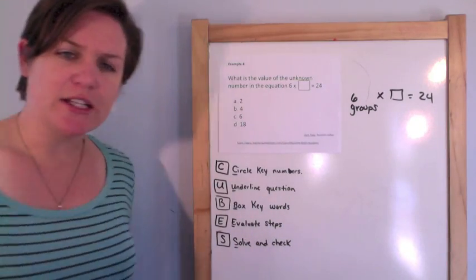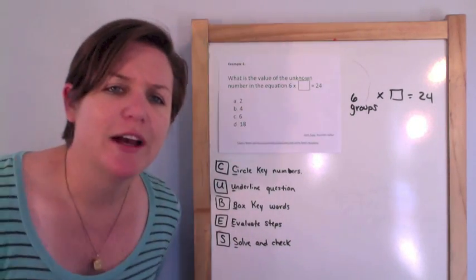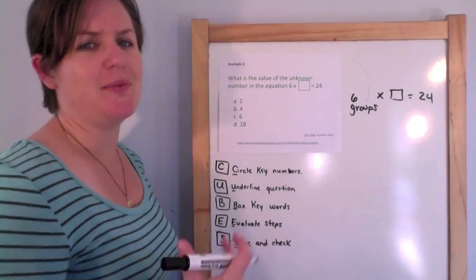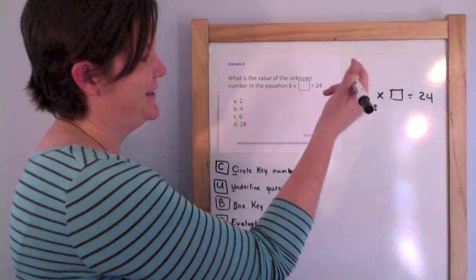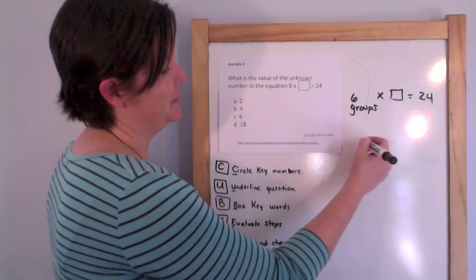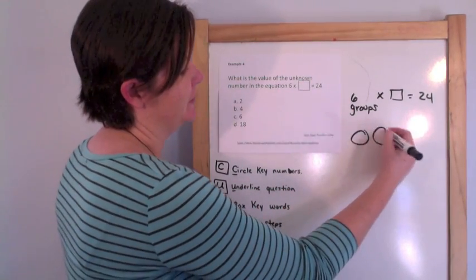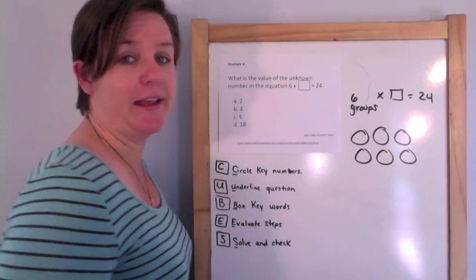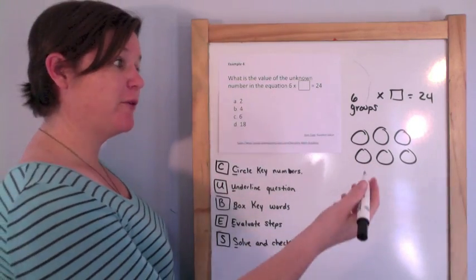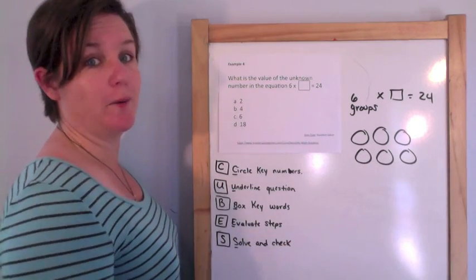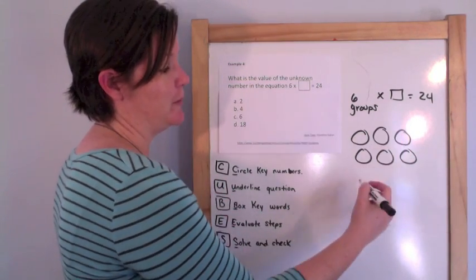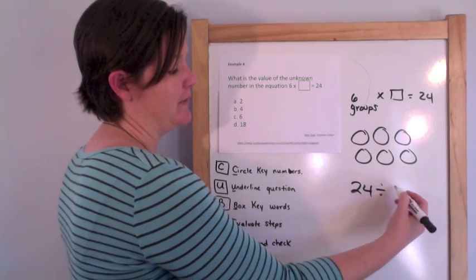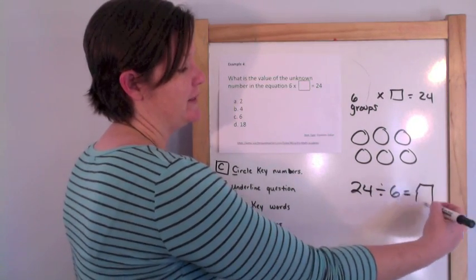This is like division. So 6 groups and I have 24 total. That's almost like saying 24 divided by 6 equals what? A fact family!